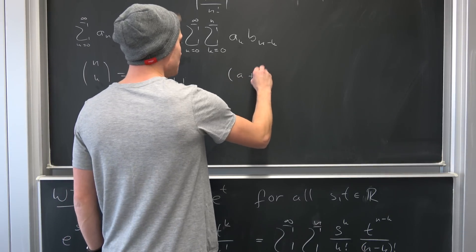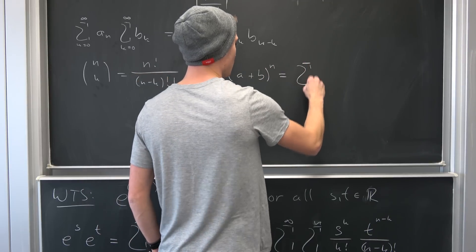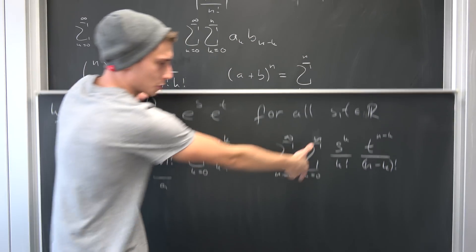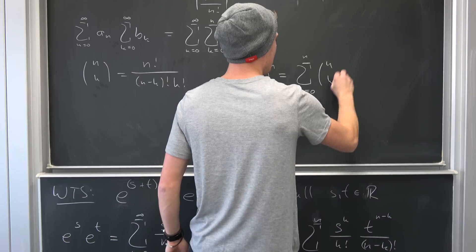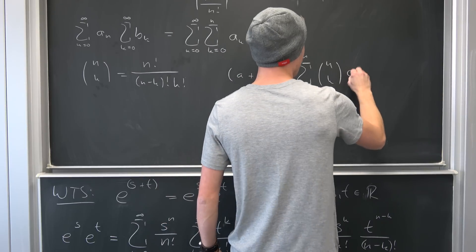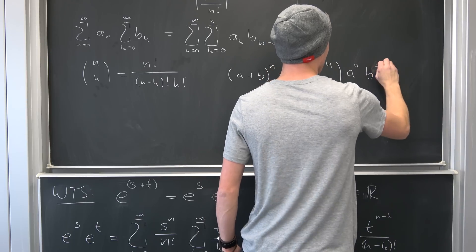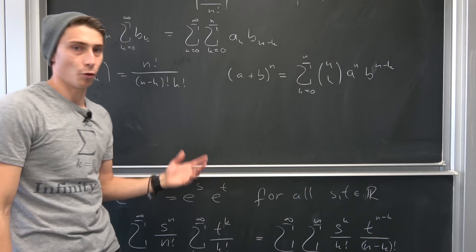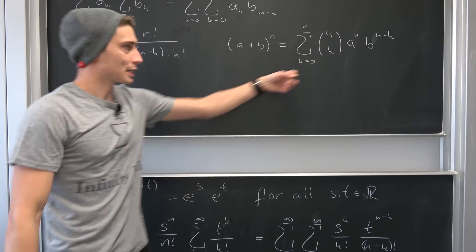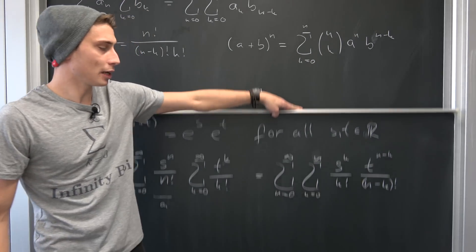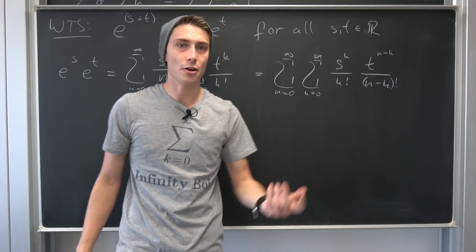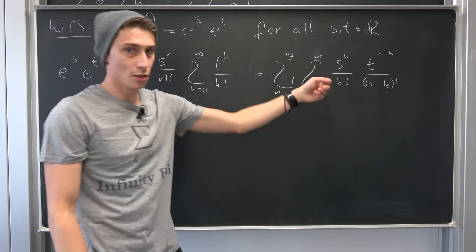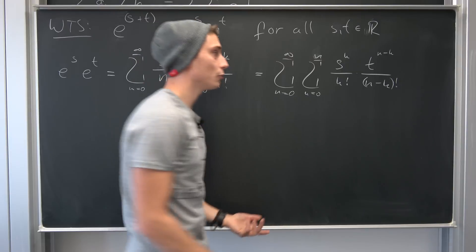I want you to remember two facts from analysis one. First, the binomial coefficient n-choose-k is n factorial over (n minus k factorial times k factorial). Second, the binomial theorem states that a plus b to the nth power equals the sum from k equals 0 to n of n-choose-k times a to the kth power times b to the n minus kth power.